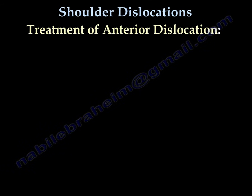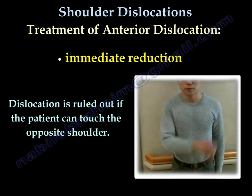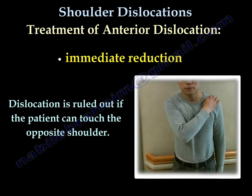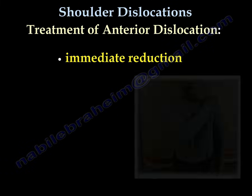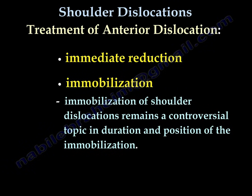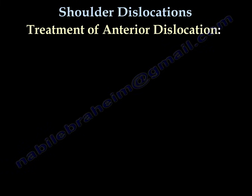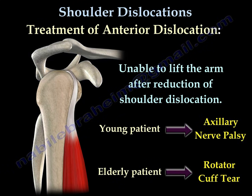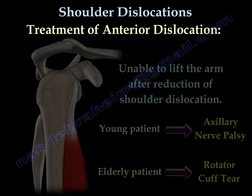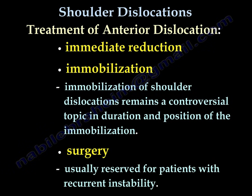Treatment of anterior shoulder dislocation: Immediate reduction. Dislocation is ruled out or reduced if the patient can touch the opposite shoulder. Immobilization of the shoulder remains controversial in duration and position. The patient will be unable to lift the arm. Surgery is usually reserved for patients with recurrent instability.